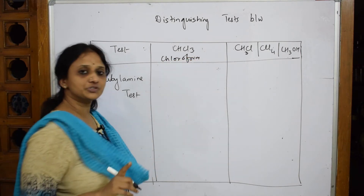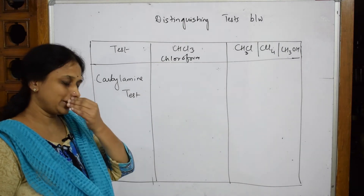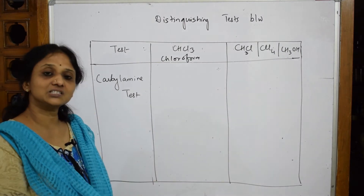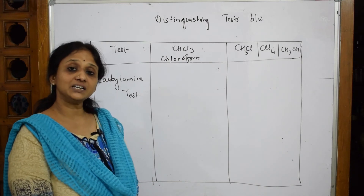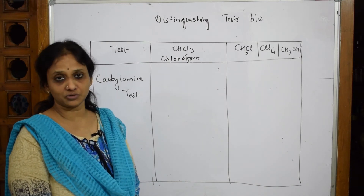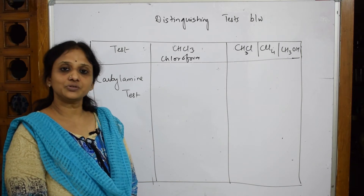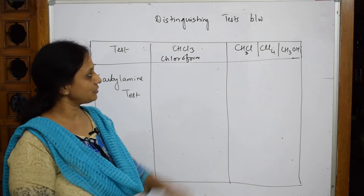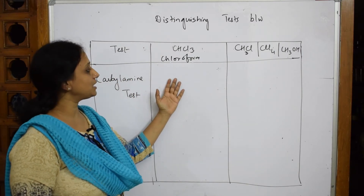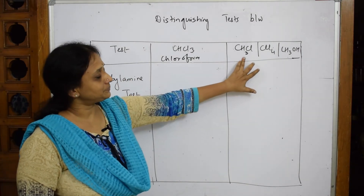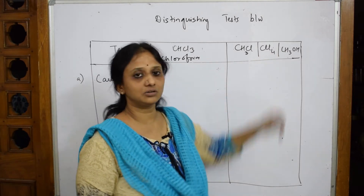Chloroform shows the carbylamine reaction — it reacts with a primary amine. This is a test used to distinguish or identify whether a compound is a primary amine or not. It's the carbylamine reaction for primary amines. Chloroform shows the carbylamine test, while methyl chloride, carbon tetrachloride, or methanol will not show this test.